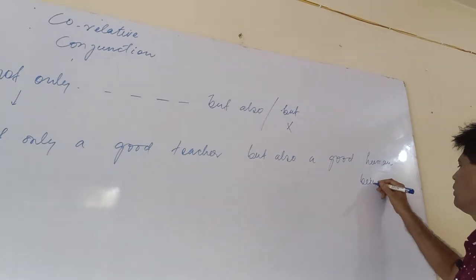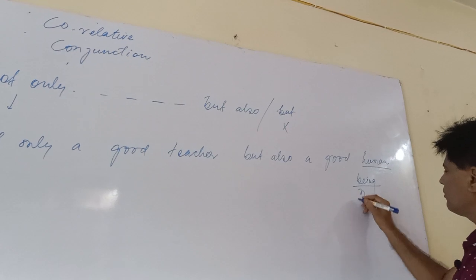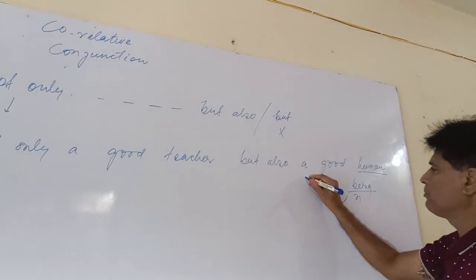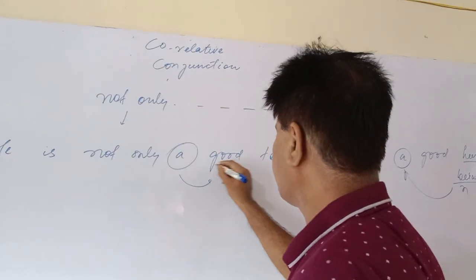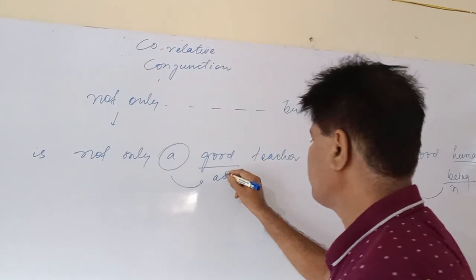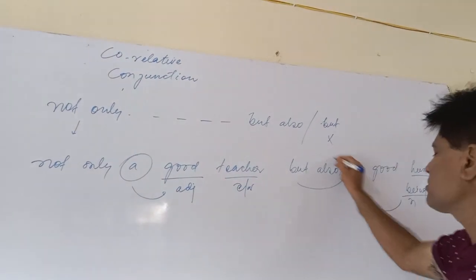Remember, once you are using one person, then you have to use article 'a'. If you are not using 'a', then the sentence will be incorrect. 'Good' is an adjective and 'teacher' is a common noun here. 'But also' is a connector, co-relative conjunction.